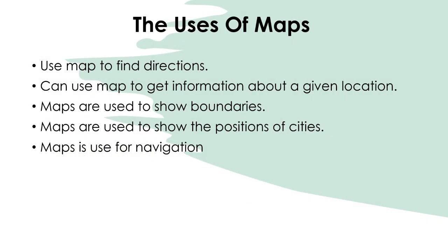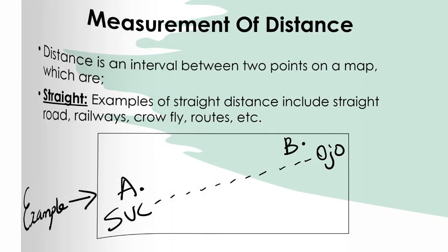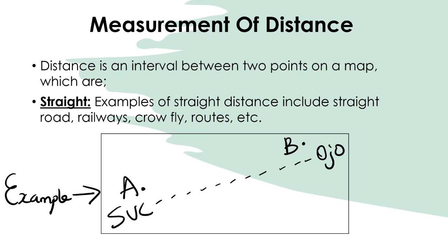Let's move on to the uses of maps. Maps are used for directions, to get information about a location, to show boundaries, to show the position of cities, and for navigation. These are the main things maps are useful for.